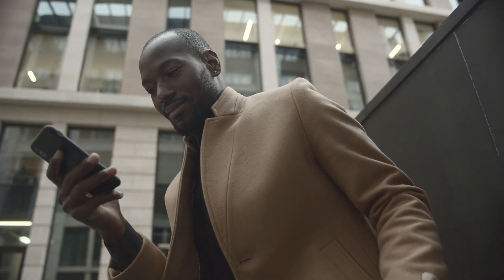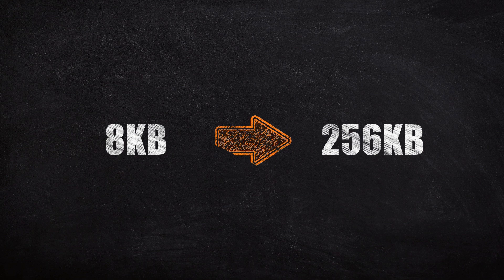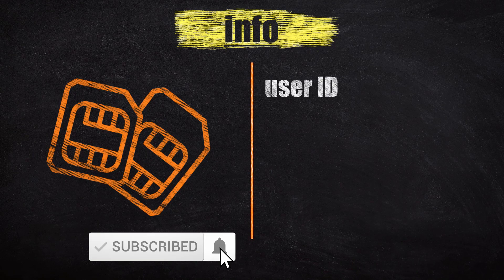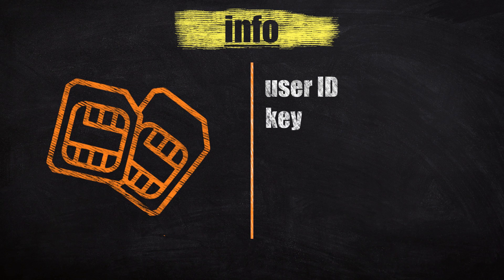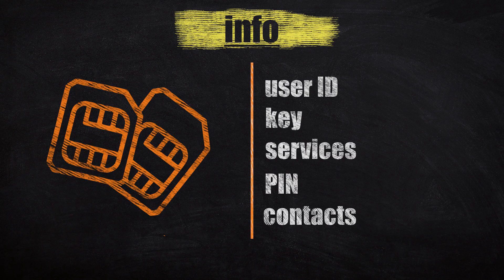So how does the SIM card work with our mobile devices? From the size of a credit card to smaller than a postage stamp and now embedded, the SIM card has gone through many form factors over the years. But the information it stores has remained virtually the same, keeping the required storage rather small. Along with a unique serial number, each SIM card carries a user ID, an authentication key, a list of services available to the user, a PIN for local use, and any contacts that may be stored on the device.